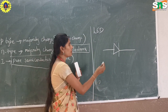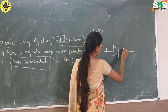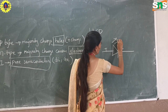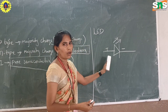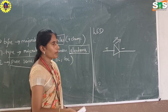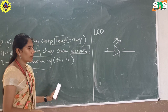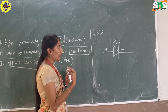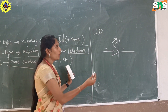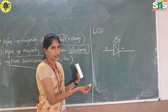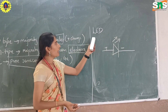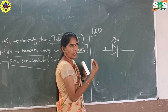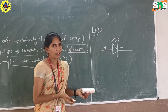The symbol of LED has a positive terminal and a negative terminal. LED is nothing but a light emitting diode. When an electric field is applied, the LED diode emits light.